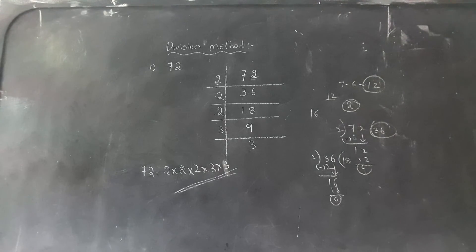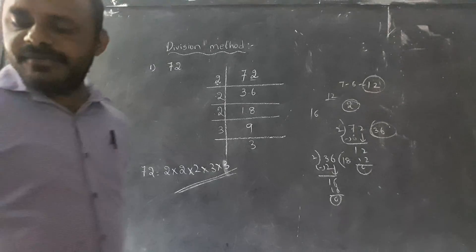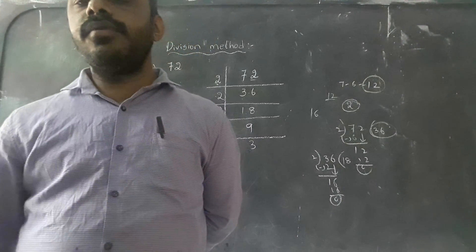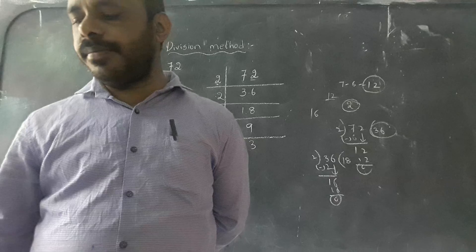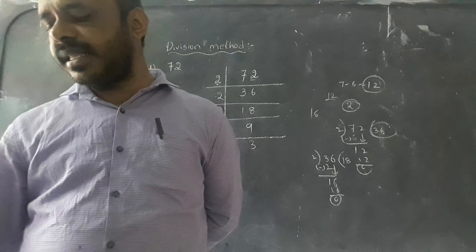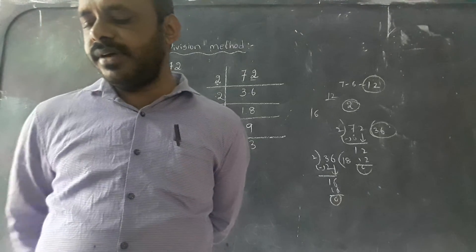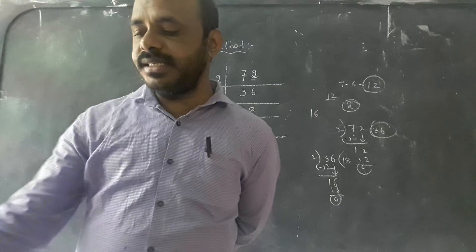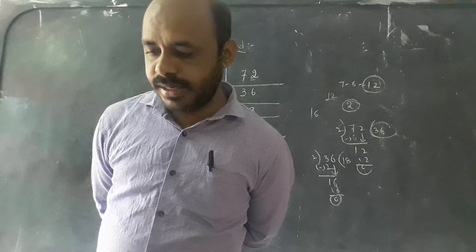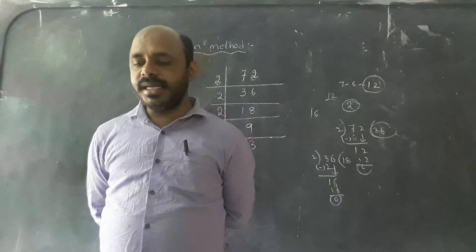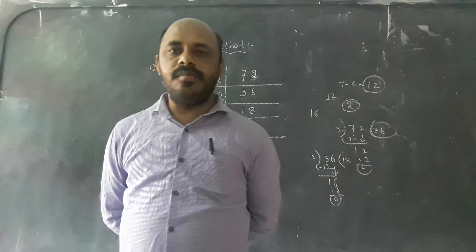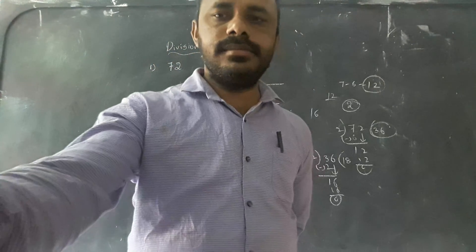Okay children. This is the process in prime factorization — a composite number we have to write as the product of prime numbers. The two methods are: one is the factor tree method, and one is the division method. Next class I will explain about the common factors. Thank you, children.